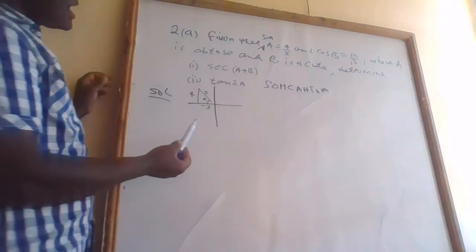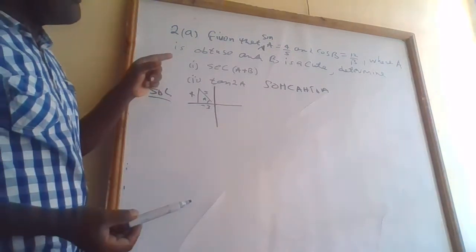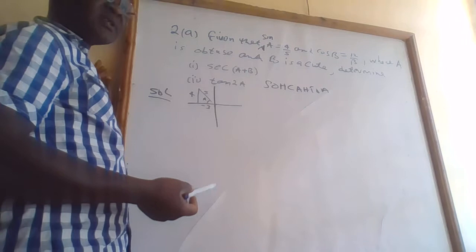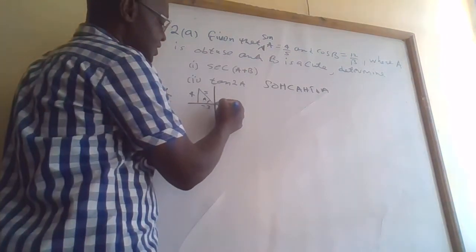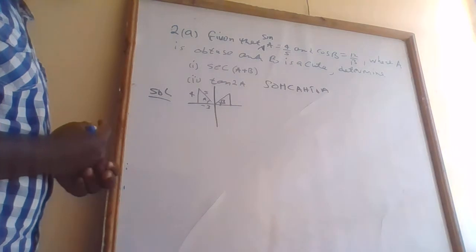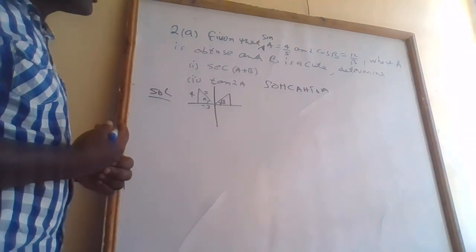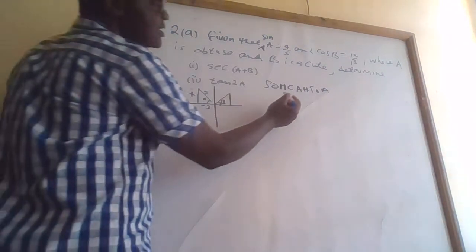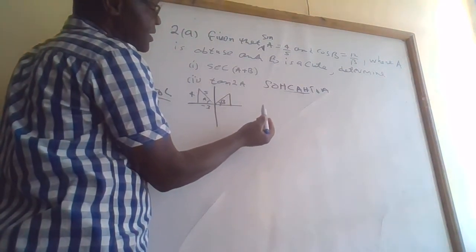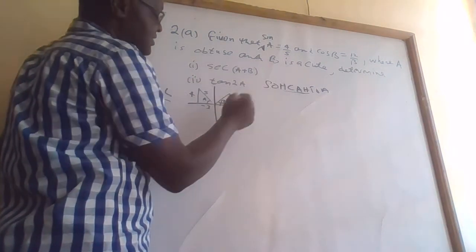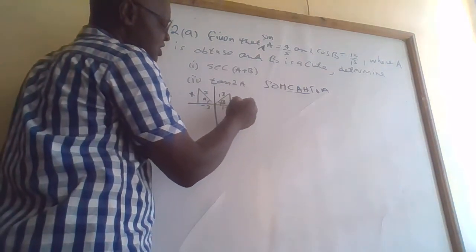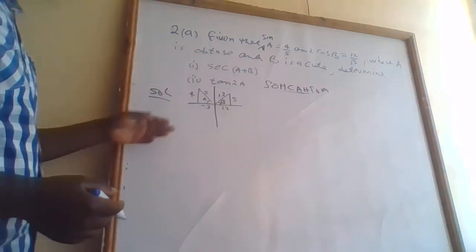For angle B, since it is an acute angle (less than 90°), it lies in the first quadrant. cos B equals 12 over 13, and since cosine is adjacent over hypotenuse, the adjacent side is 12 and the hypotenuse is 13, so the opposite side is 5.